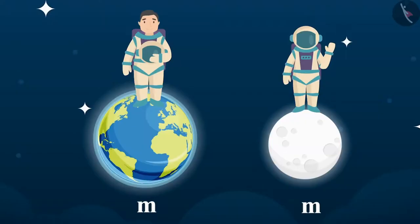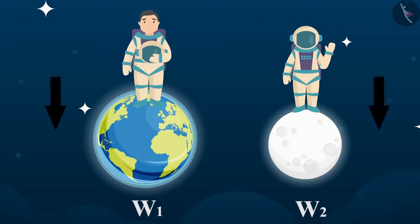Another important distinction is that the mass of an object remains the same everywhere, whereas the weight of an object varies with the position of the object, because the acceleration due to gravity varies with position.